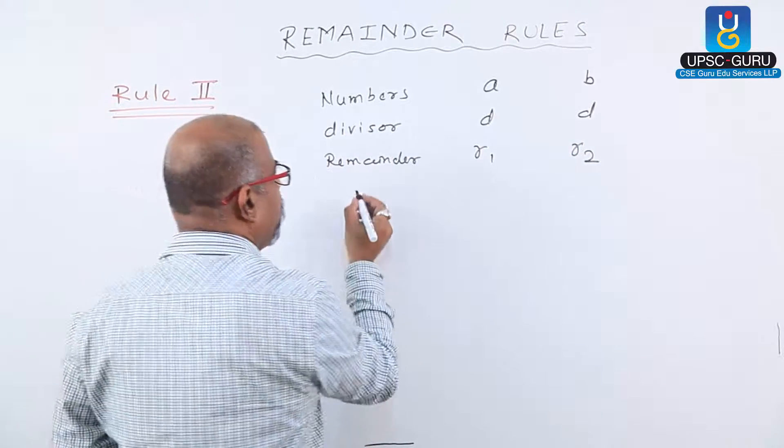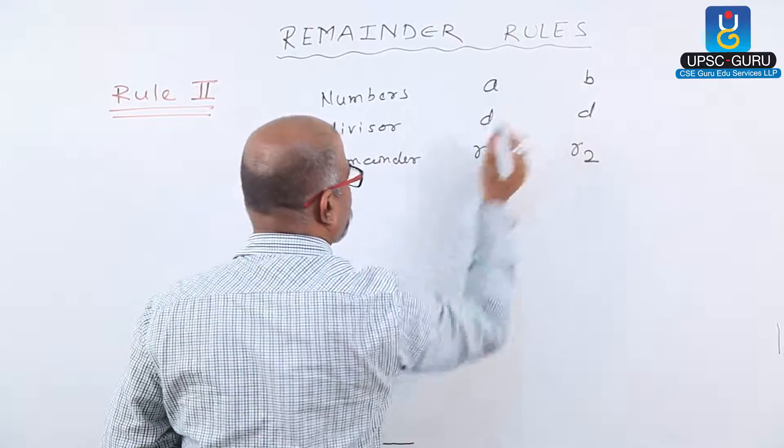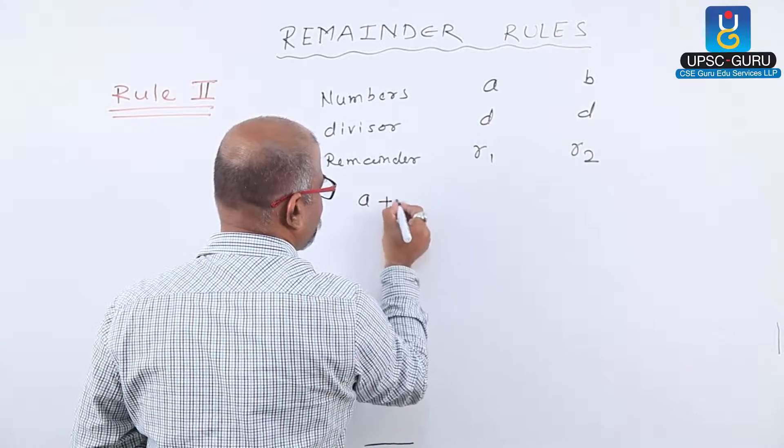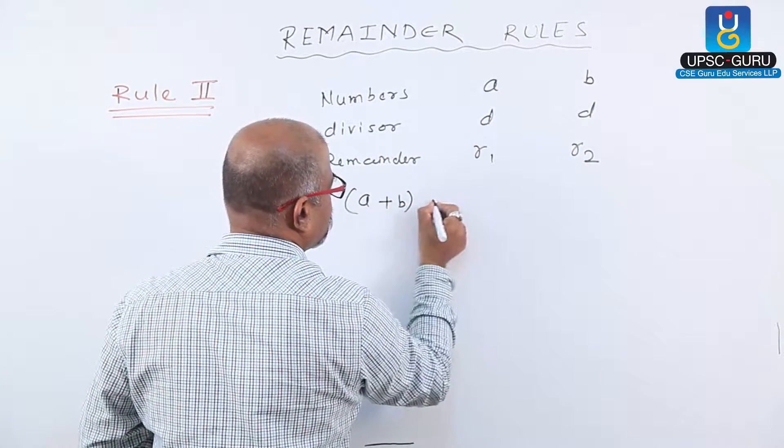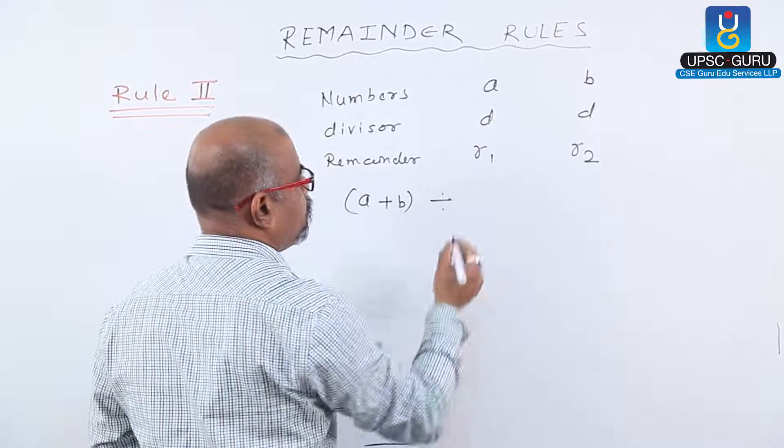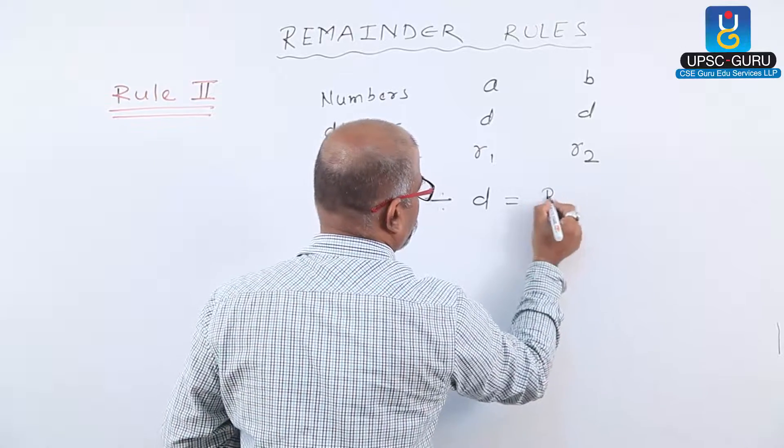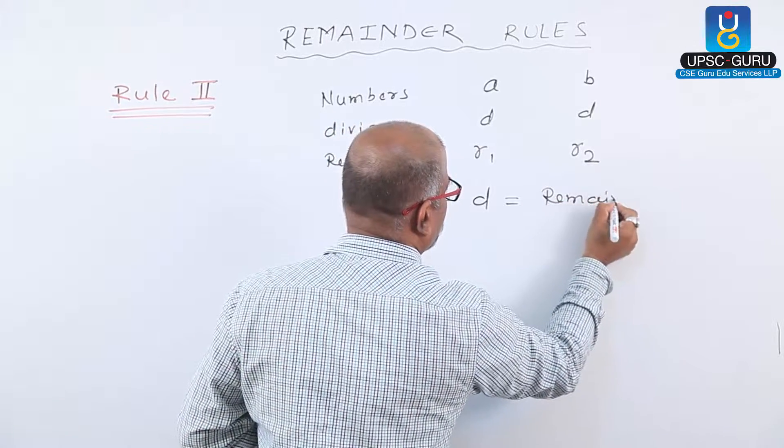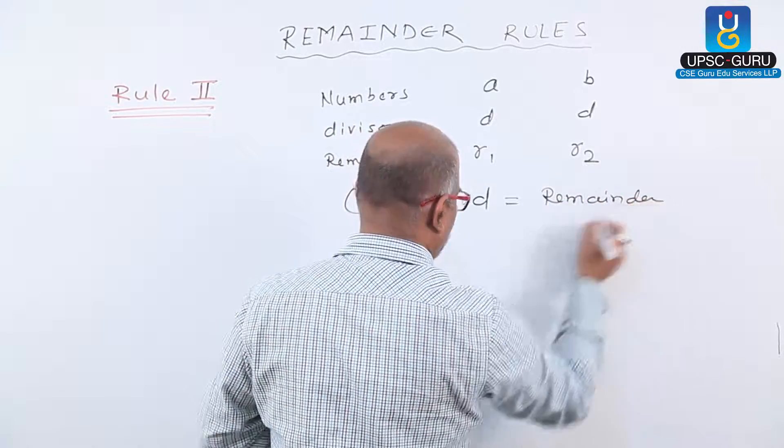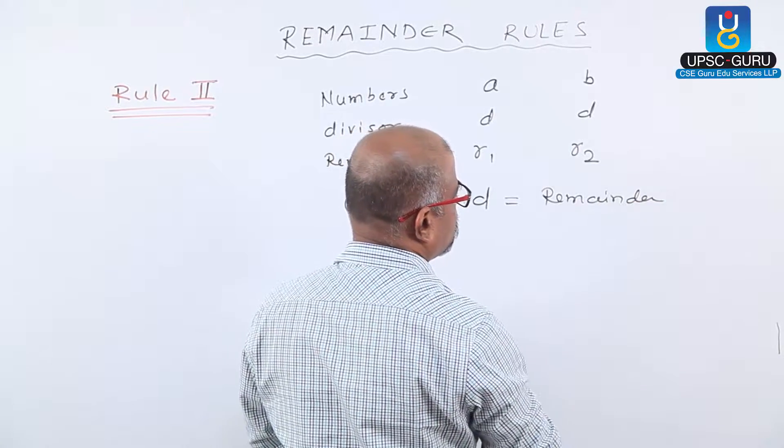If we divide the sum of these two numbers, that is A plus B, by the same divisor D, then what remainder do we get? That is the question.